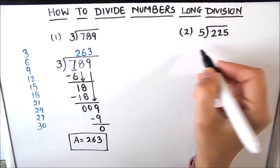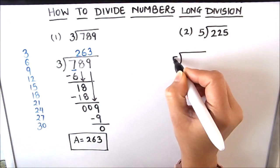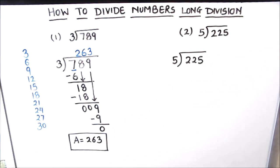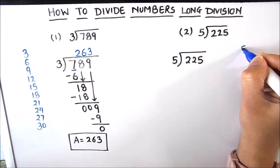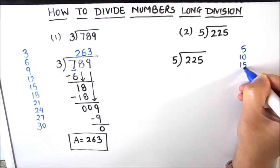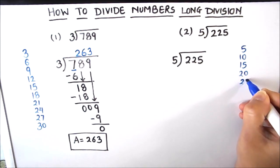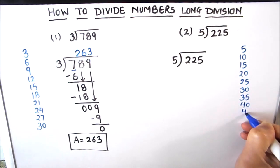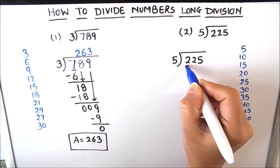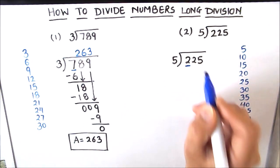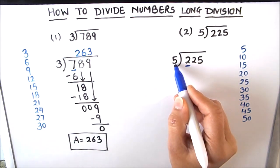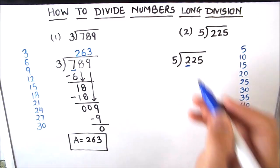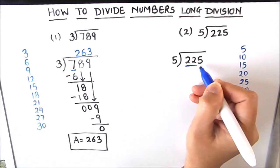Our next question: the divisor is 5 and the dividend is 225. The first step is to write the tables of 5: 5, 10, 15, 20, 25, 30, 35, 40, 45, and 50. First we look at the highest place value digit which is 2, but 2 is less than the divisor 5 and 5 does not go into 2. So we take two digits together and divide 22 by 5.